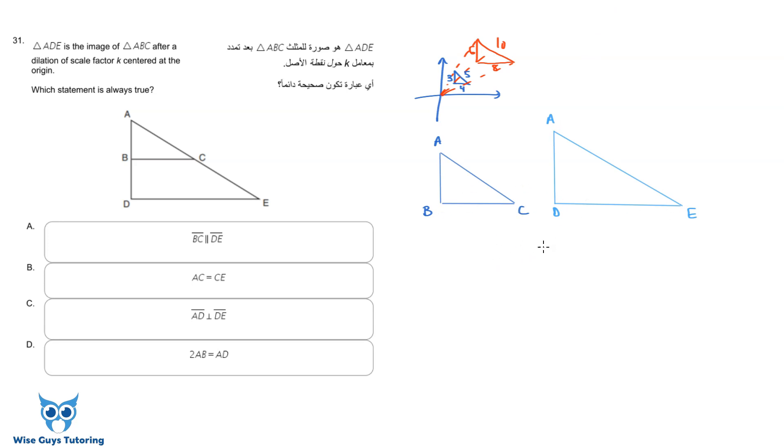For example, if one triangle has sides of 3, 4, and 5 centimeters, and you doubled it, the image would be 6, 8, and 10 — proportional for the corresponding sides. So triangle ABC and triangle ADE will be similar triangles, meaning all their angles are the same.